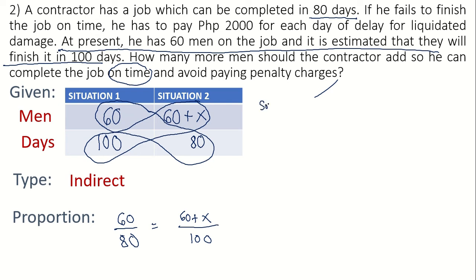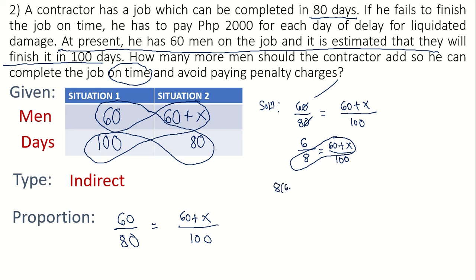Let's now solve. 60 over 80 equals 60 plus X over 100. We can cancel the zeros to simplify: 6 over 8 equals 60 plus X over 100. Cross-multiplying: 8 times (60 plus X) equals 6 times 100. Distributing: 480 plus 8X equals 600.